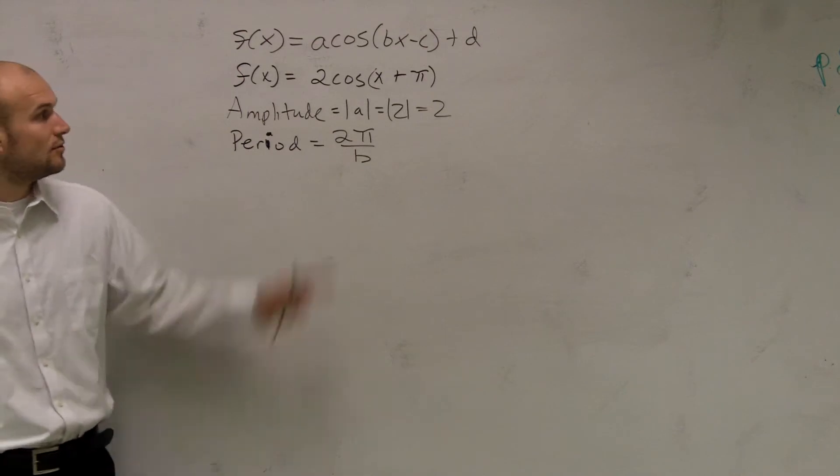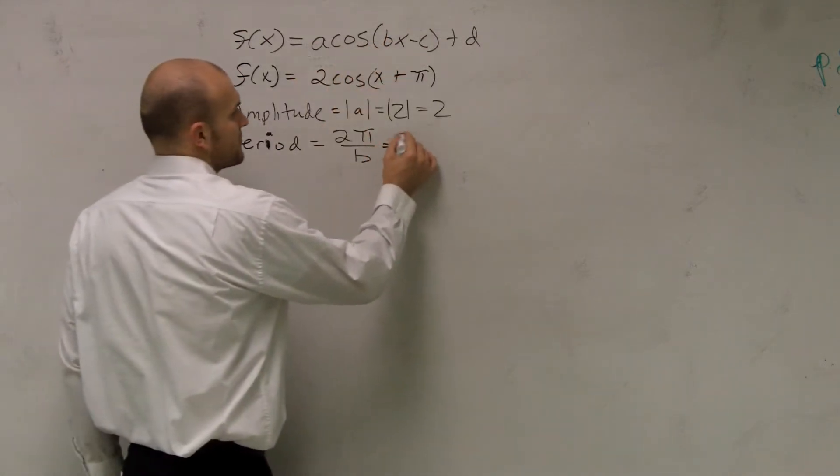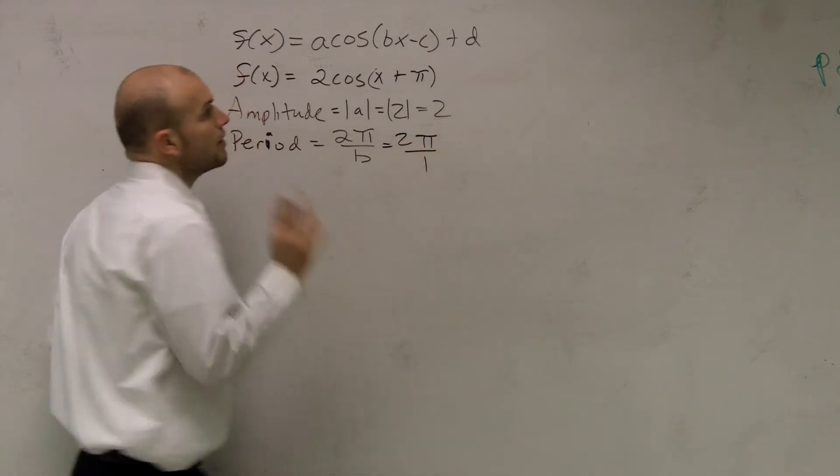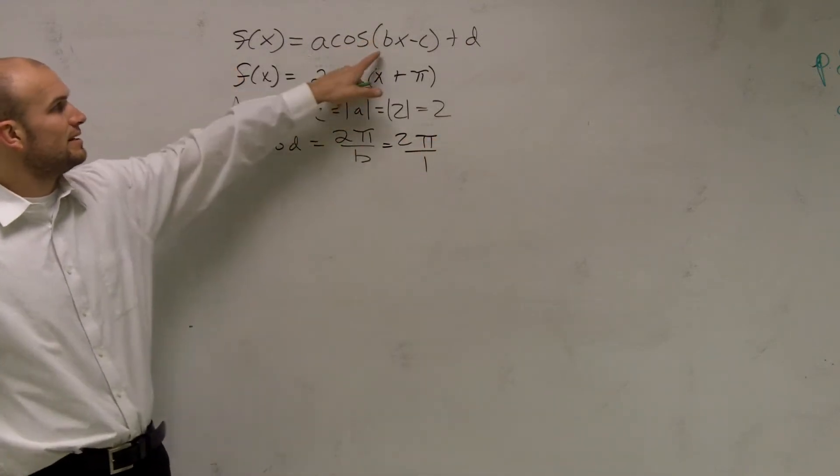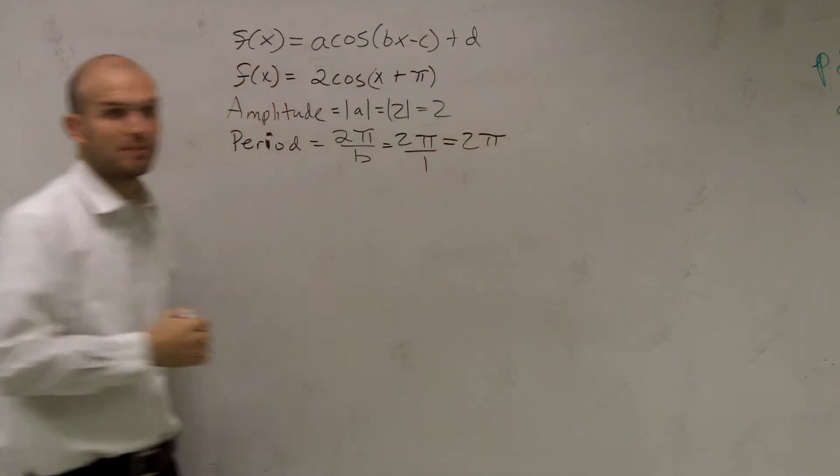So we have 2π over B. Well, we notice, what is our number in front? It's 1, right? Yeah, it's under. Remember, B is 2π over B. So what number is in front of that? So it's going to be our 1. So therefore, this is going to be 2π.